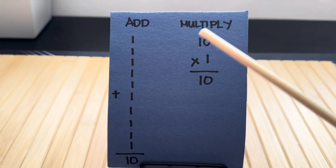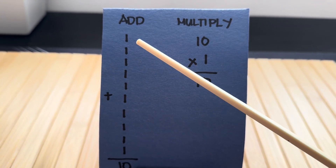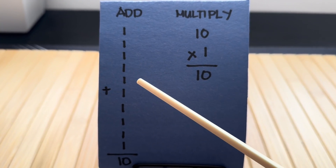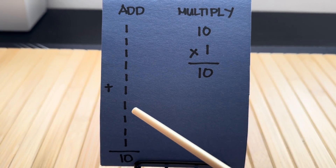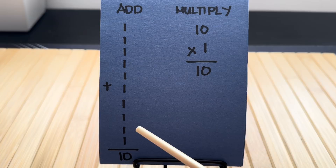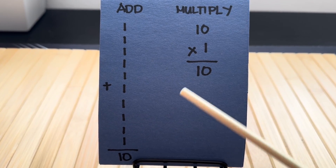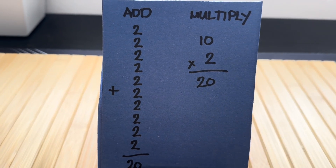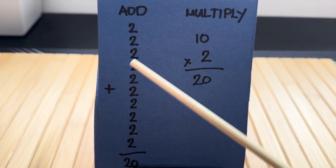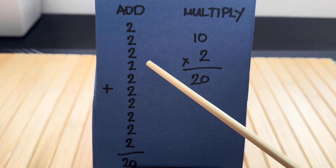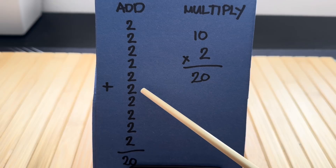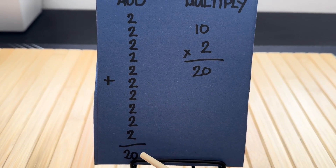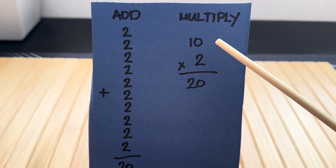Let's try some more examples. Let's add 1 plus 1 plus 1 plus 1 plus 1 plus 1 plus 1 plus 1 plus 1 is equals to 10. Let's multiply: 10 by 1 is equals to 10. Let's continue: 2 plus 2 plus 2 plus 2 plus 2 plus 2 plus 2 plus 2 is equals to 20. In multiplication, 10 times 2 is equals to 20.